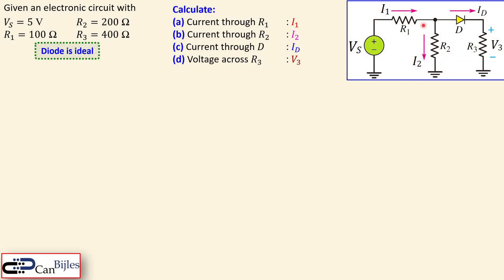Let's look at our example. We have this circuit given: one voltage source VS with a value of five volts, three resistors R1, R2, and R3 with the values shown. The diode is considered using the constant voltage model. We would like to calculate the current through R1, the current through R2, the diode current ID, and the voltage across resistor R3, which is V3.